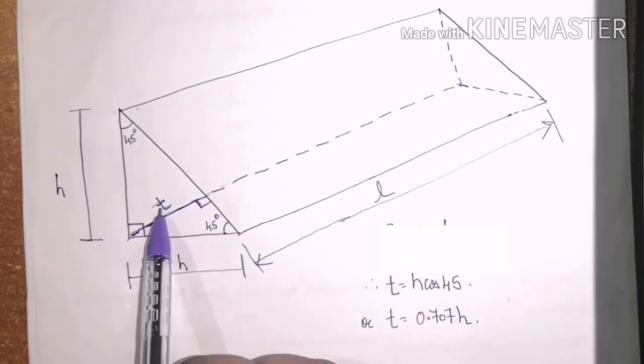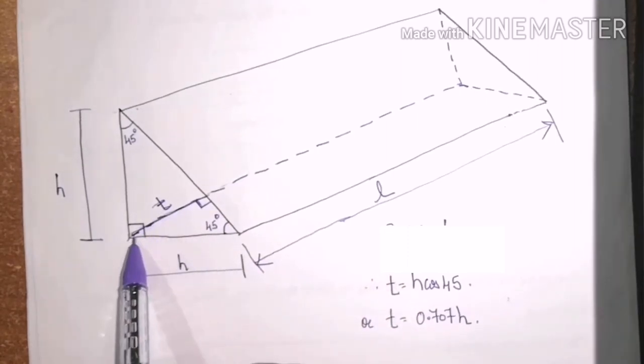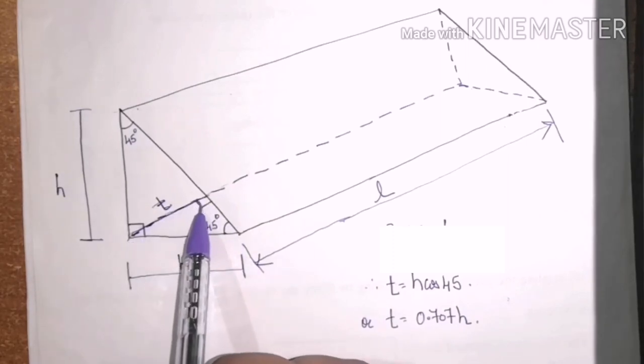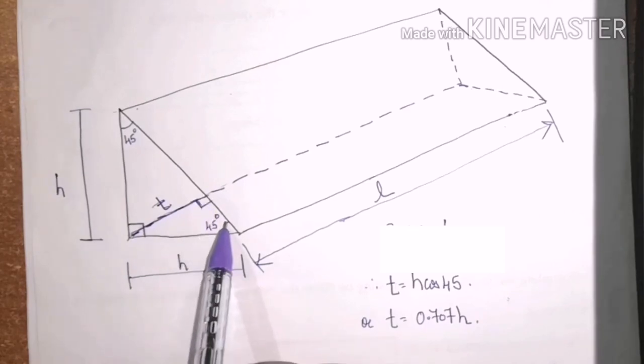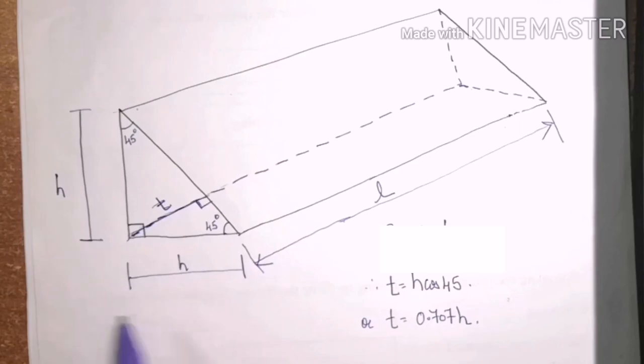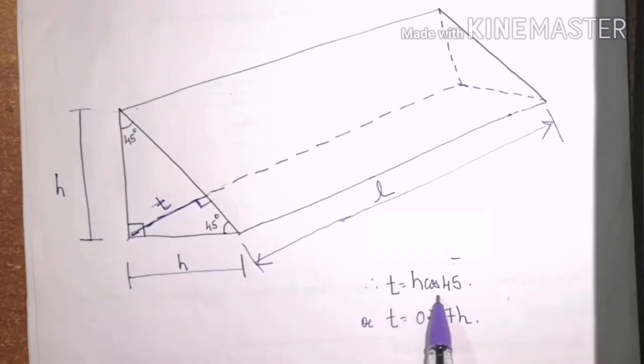To find the value of this T, just consider this simple triangle. We have this angle as 90 degree because we have drawn perpendicular. This angle as 45 degree because it is right angle isosceles triangle. Now, in this triangle, if I apply cos theta, I will get T as h cos 45. If I use the value of cos 45, I will get T is equal to 0.707h.